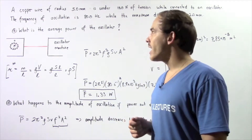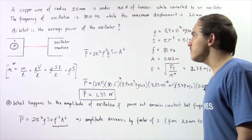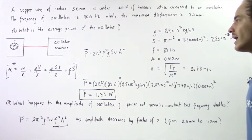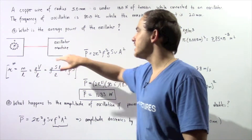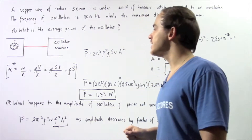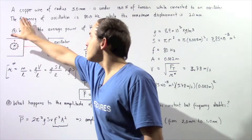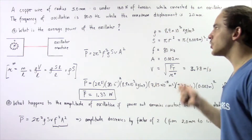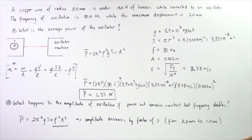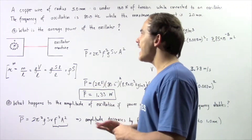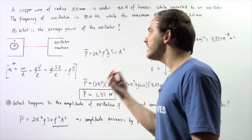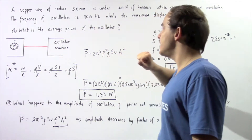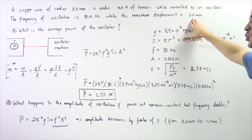Suppose a copper wire of radius 5 millimeters is under 10 newtons of tension while connected to an oscillator as shown in the diagram. We have an oscillator machine with the wire connected to it. When we turn the knob, the frequency of oscillation is 80 hertz and the maximum displacement is 2 millimeters. In part A, we want to find the average power output required by the oscillator to give the wire a frequency of 80 hertz and a displacement of 2 millimeters.